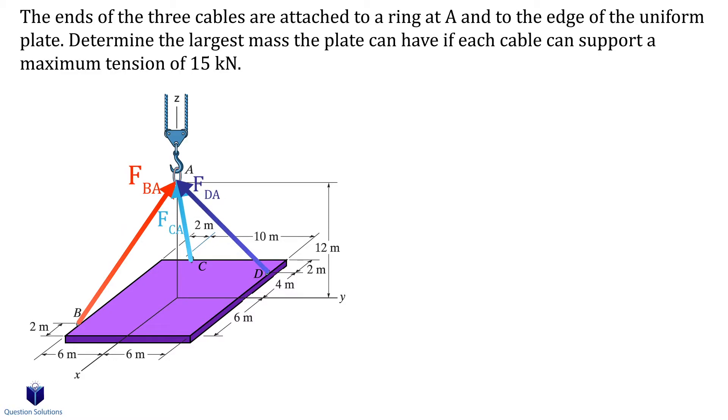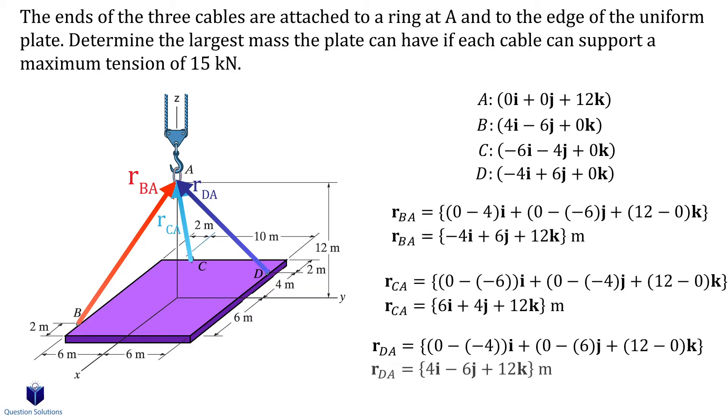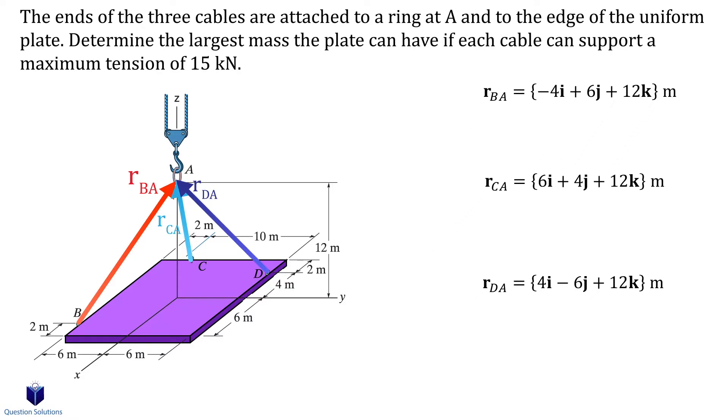Let's start with our locations. Now that we have our locations let's write our position vectors for each cable. I am assuming all the forces start from the plate and travel towards point A, so the position vectors will be from B to A, C to A, and D to A. Now that we have the position vectors it's time for the magnitudes.